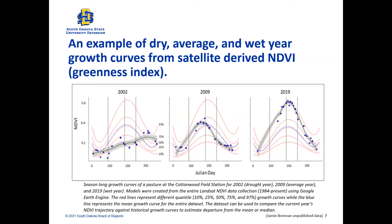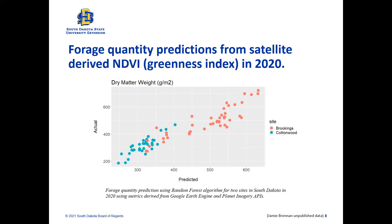This gives you an idea of what's happening to the vegetation so you can tell what trajectory you're on in different years. How does the greenness index compare to actual biomass weight? We took data in 2020 at the Cottonwood Station and also at a site near Brookings, and you can see that it works quite well to predict actual forage production. So the greenness index is really useful to compare with actual forage production.